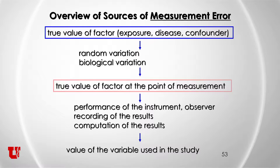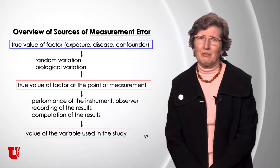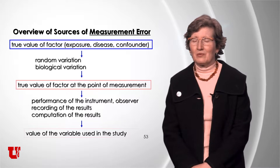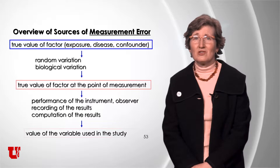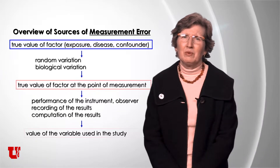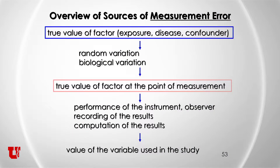Sources of measurement error: imagine there is the true value of some factor — whether it's exposure, disease, or confounder. There is a truth. But the truth is subject to random variation and biological variation. The classic example is blood pressure. People's blood pressure changes throughout the day depending on activities; they come into the doctor's office stressed and it changes. That's biological and random variation. At the moment you choose to measure it, the performance of the instrument and the observer, how results are recorded and computed, will finally provide the value of that variable used in the study.